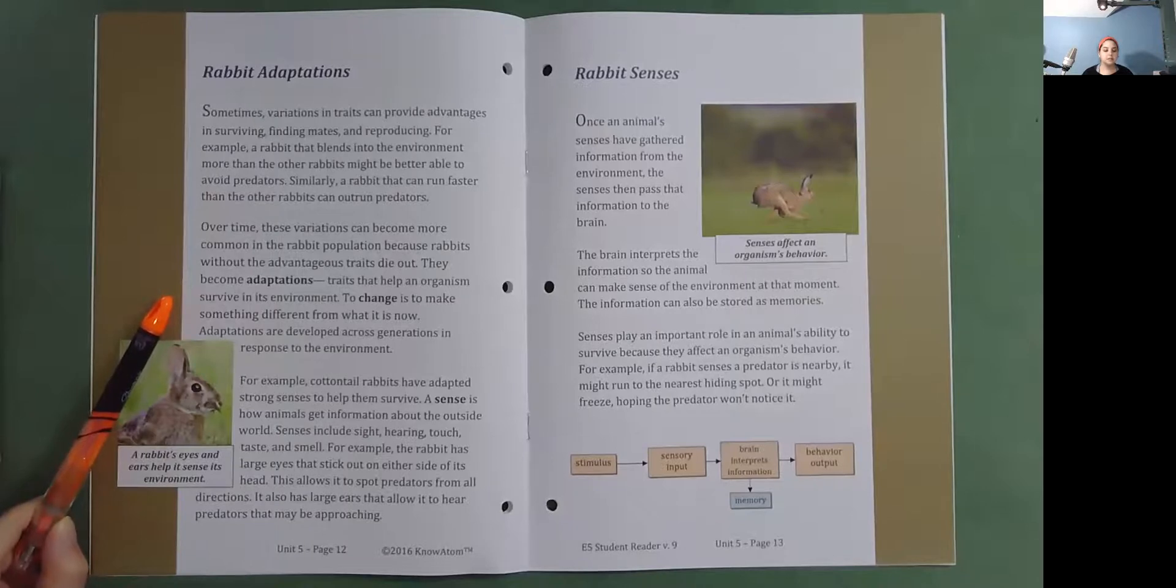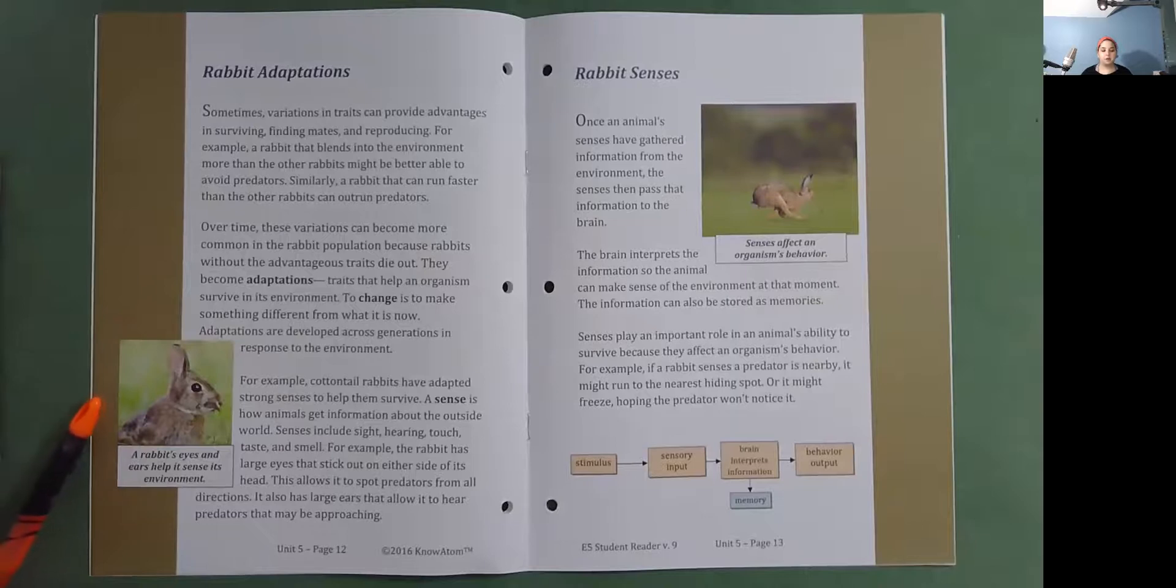To adapt is to change, to make something different from what it is now. Adaptations are developed across generations in response to the environment. For example, cottontail rabbits have adapted strong senses to help them survive. A sense is how animals get information about the outside world. Senses include sight, hearing, touch, taste, and smell. For example, the rabbit has large eyes that stick out on either side of its head. This allows it to spot predators from all directions. It also has large ears that allow it to hear predators that may be approaching. A rabbit's eyes and ears help it sense its environment.